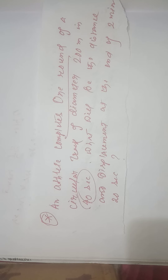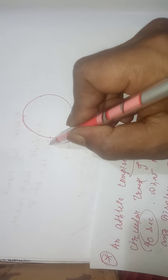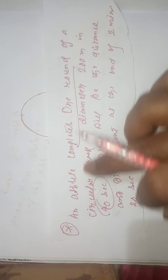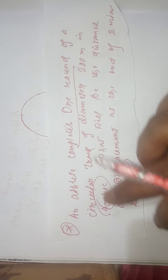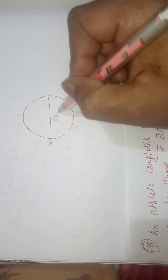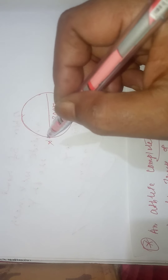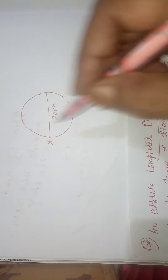The athlete is moving in a circular track, so let's draw a circular track first. Suppose the athlete starts the journey from point X. If they travel the path and return to the same position X, then one round is complete. The diameter is given as 200 meters and one round can be completed in 40 seconds. One round is the circumference, not the perimeter, because it is a circle.